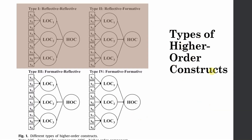These are the different types of higher-order construct. In this example, I have reflective-reflective and reflective-formative. In reflective-reflective, the arrows point towards the indicators from the latent variables, and these three lower-order constructs are reflected in the higher-order construct with arrows pointing towards the lower-order constructs. This is reflective at both levels — just as internal service quality in this case. The properties identified for reflective constructs still stand at the higher level. These lower-order constructs are interchangeable, and even if you remove one of them, your construct will still retain its identity.